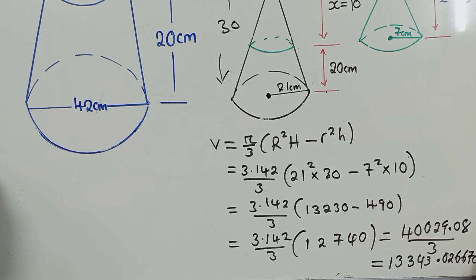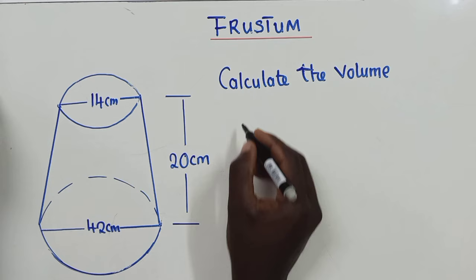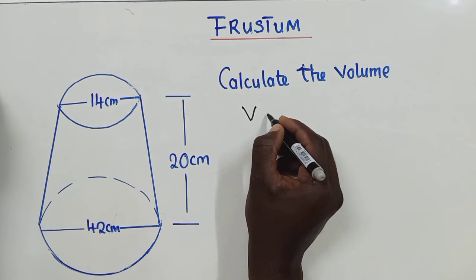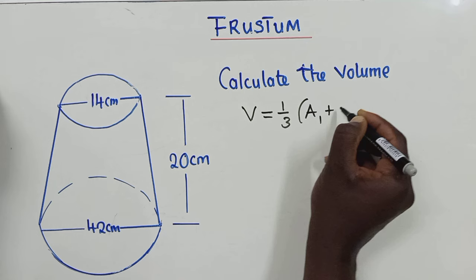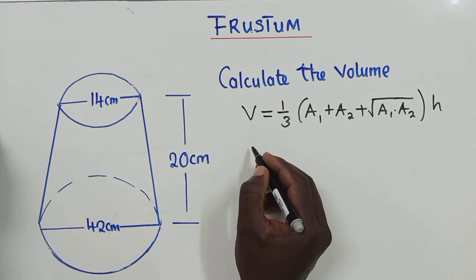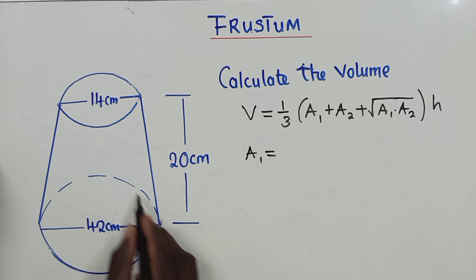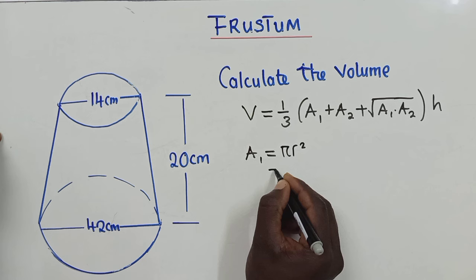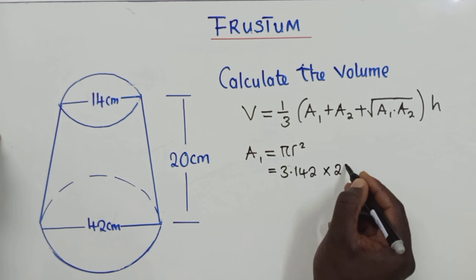So this is our solution right here. So the other method will be to use this formula. Volume is 1/3 times A1 plus A2 plus square root of A1 multiplied by A2 times h. So what is our A1? A1 will be the area of the base, this base here. So this is a circle.